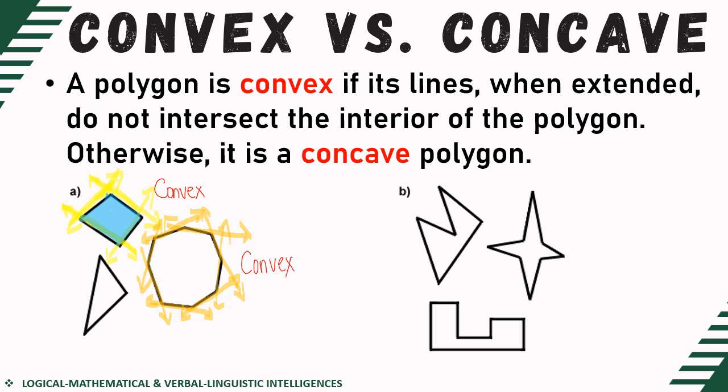For the third figure, if I'm going to extend the sides of this triangle, or three-sided polygon, it does not pass through the interior points of the given polygon. Hence, I can conclude that this is also a convex polygon. So all these figures in set A are considered convex polygons.